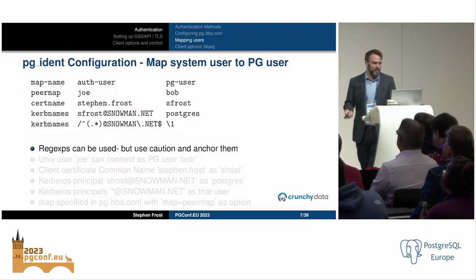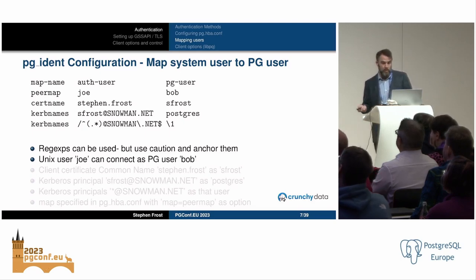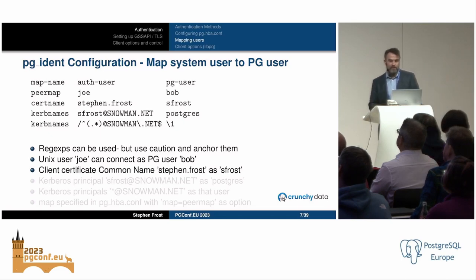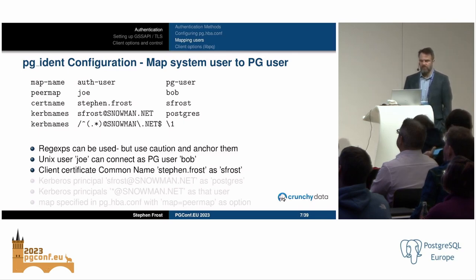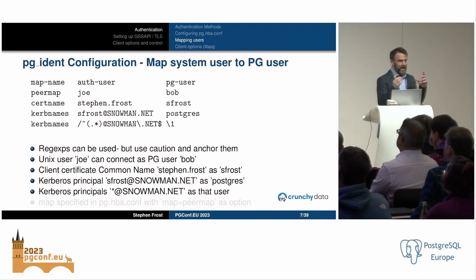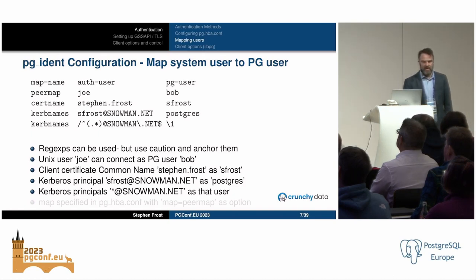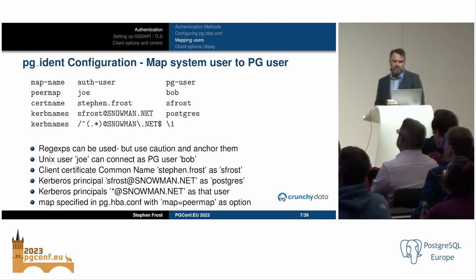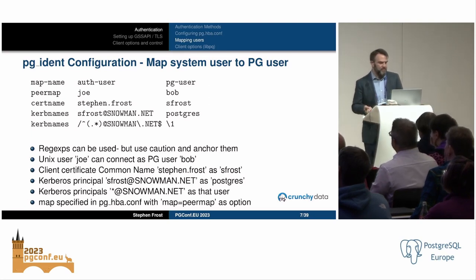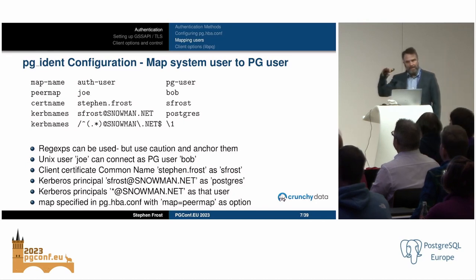pg_ident is for mapping system users to Postgres users. You can specify regular expressions or bare names — for example, Unix user Joe can log in as Postgres user Bob. For client-side certificates, you control the CN (common name) in the Postgres side. Kerberos principals support regular expressions — you can use a capture group with dot-star and then replace it with backslash-one to authenticate as a user at a particular realm. You specify what map to use inside your pg_hba using map= and then the map name.